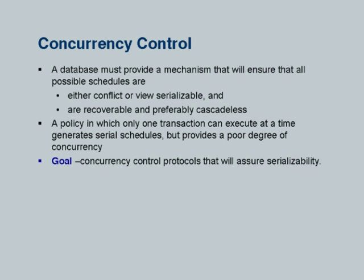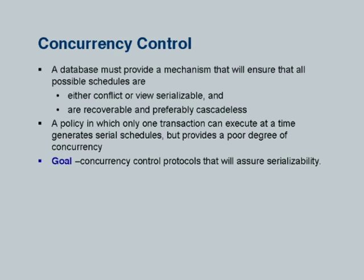Some schedules are good and some are bad. What you want is a mechanism that will ensure that bad schedules will never occur — that only good schedules will occur. That is the job of the concurrency control mechanism of a database system. Pretty much all database systems have a concurrency control manager whose job is to ensure that schedules will be serializable. Well, they almost do that — we will see why the word 'almost' applies.